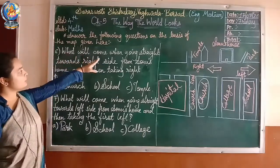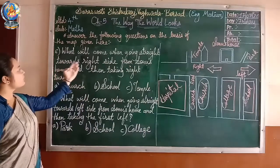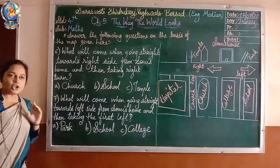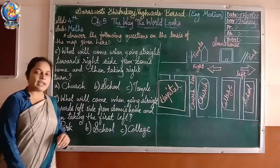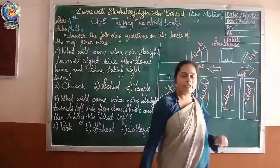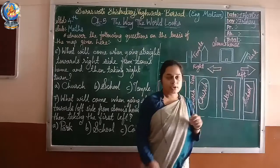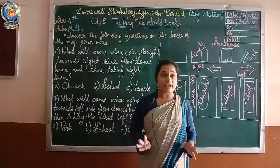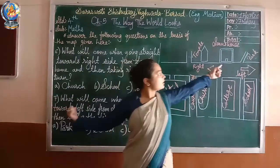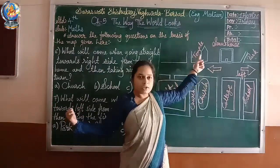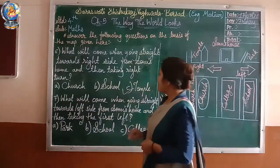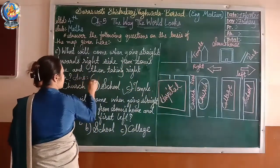Sixth question: what will come when going straight towards the right side from Sonu's home and then taking the right turn? Options are A. Church, B. School, C. Temple. Sonu comes out, goes towards the right and then takes a right turn — it's the temple. So church and school are not the answer; the answer is option C, temple.